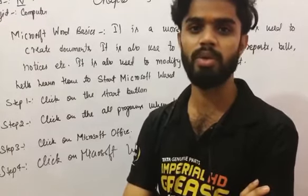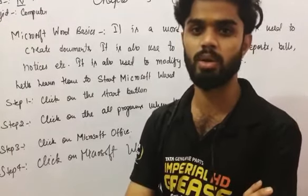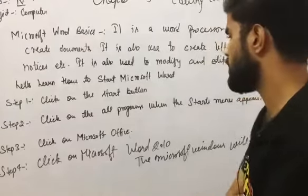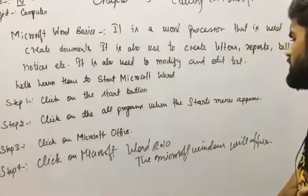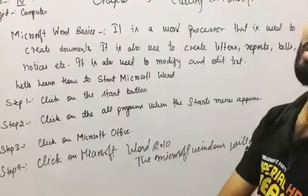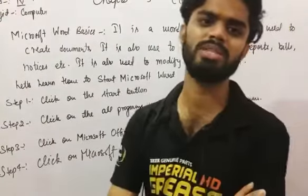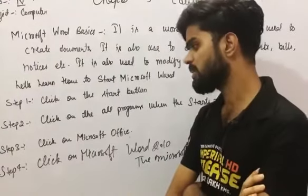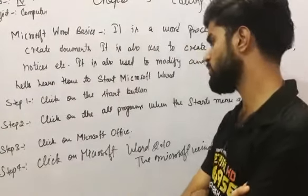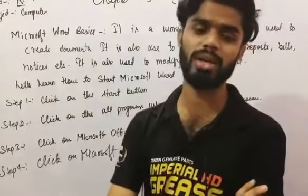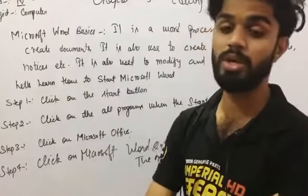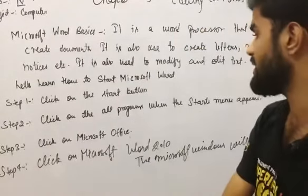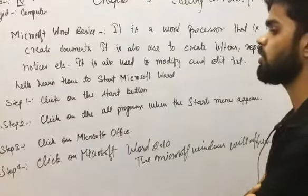On our desktop, when we switch on our computer, step 2: click on 'All Programs' when the Start menu appears. When we click on the Start button, we see there is another option at the top known as 'All Programs'. We need to click on that icon, and then a menu appears.